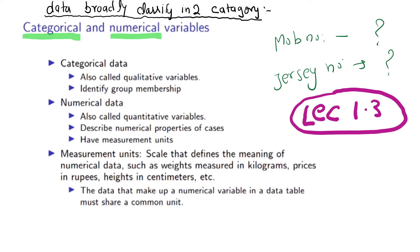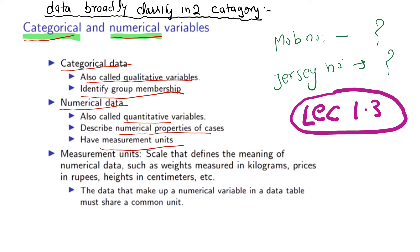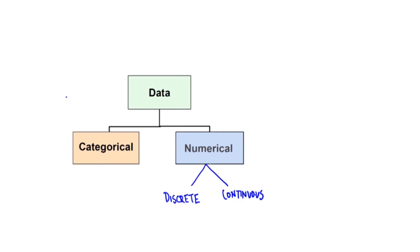Data is broadly classified into two categories: first, categorical data or qualitative data; second, numerical data or quantitative data. Categorical data, also called qualitative variables, identify group membership. Numerical data, also called quantitative variables, describe numerical properties of cases and have measurement units — such as weights in kilograms, prices in rupees, heights in centimeters. Within numerical data, there are two types: discrete and continuous.